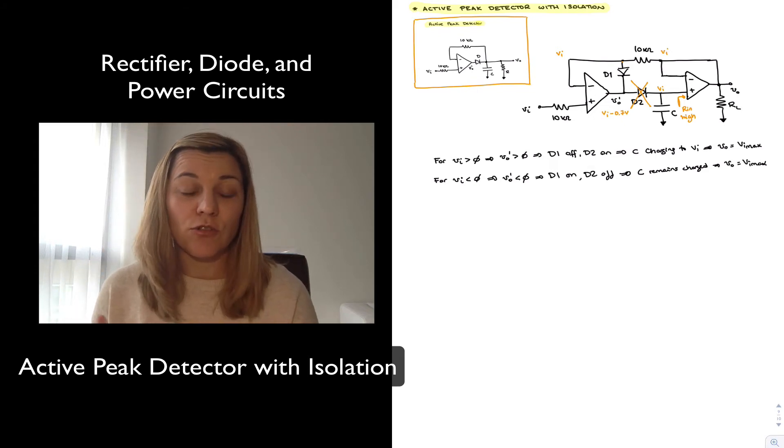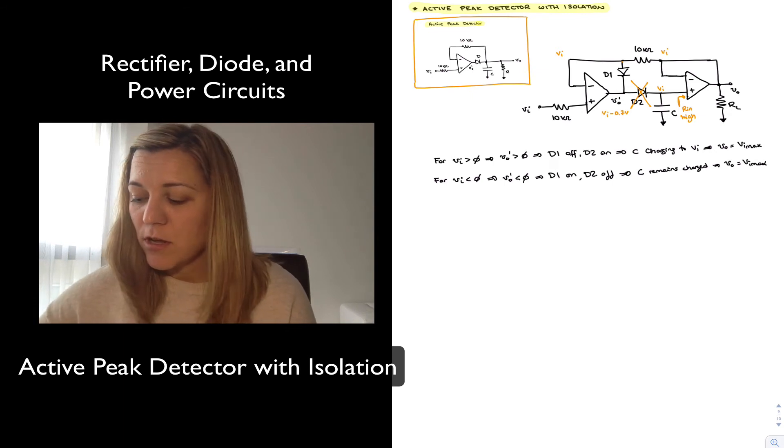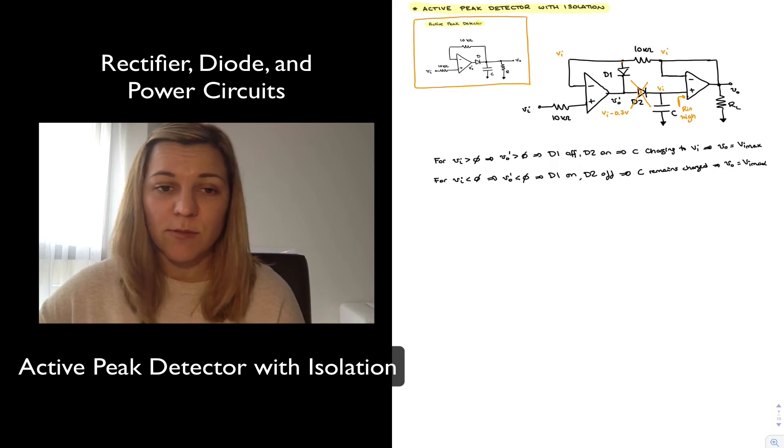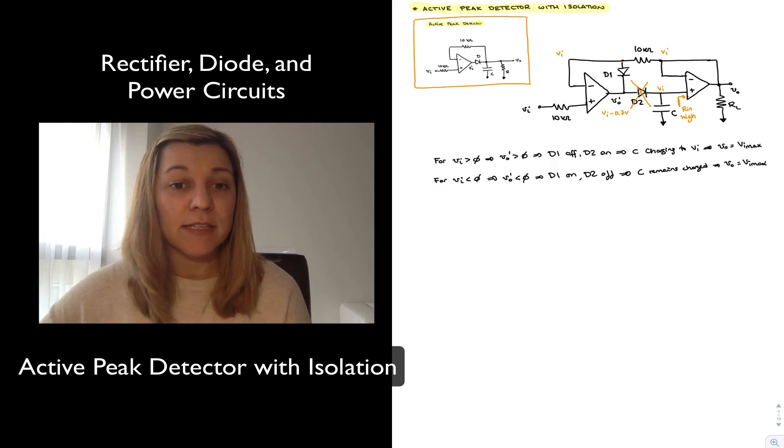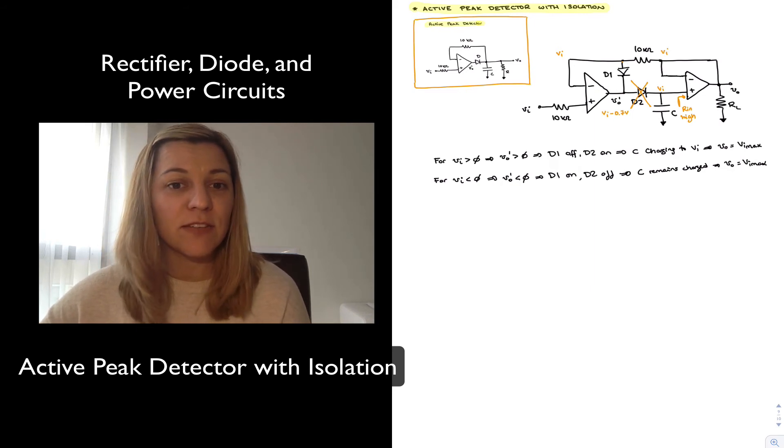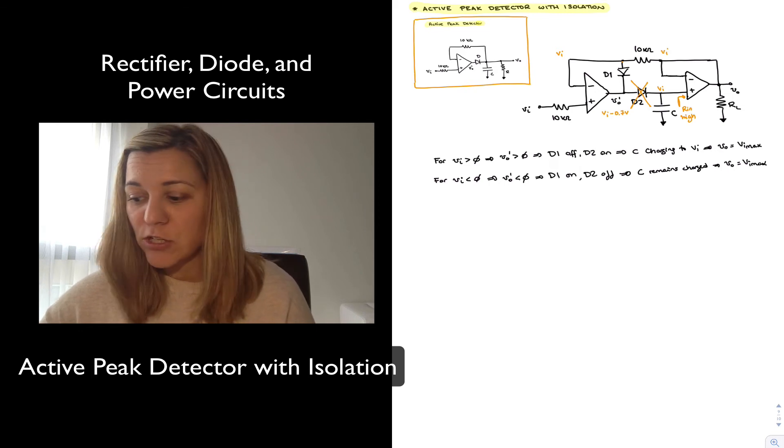Now in all reality C is not going to just stay charged because even if the diode has a small reverse leakage current, it does have some reverse leakage current. And same thing for the op-amp, the input resistance is close to infinite or ideally infinite but in reality in practical cases it's going to have some finite value. And so if you leave the circuit on for a long time it will eventually discharge. But it's going to do so much more slowly than the previous versions because of the isolation.